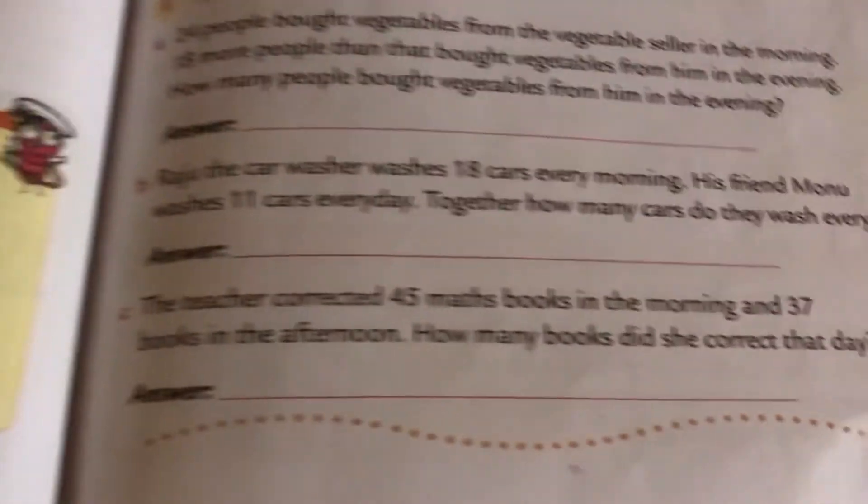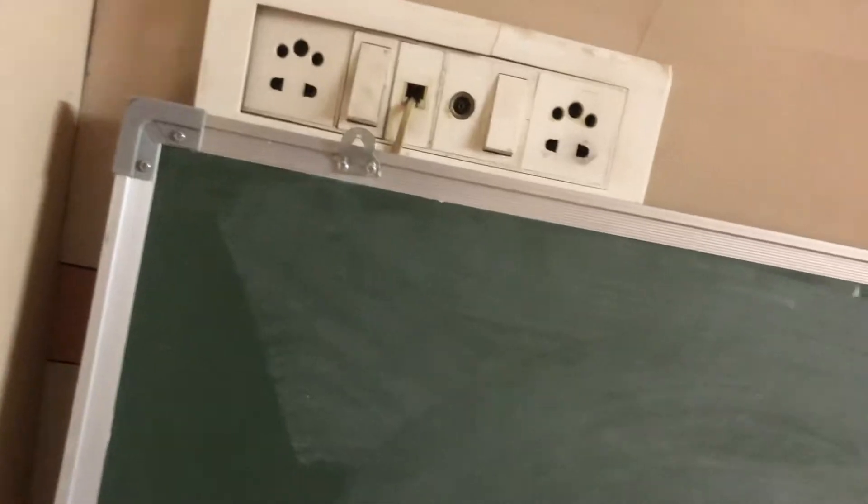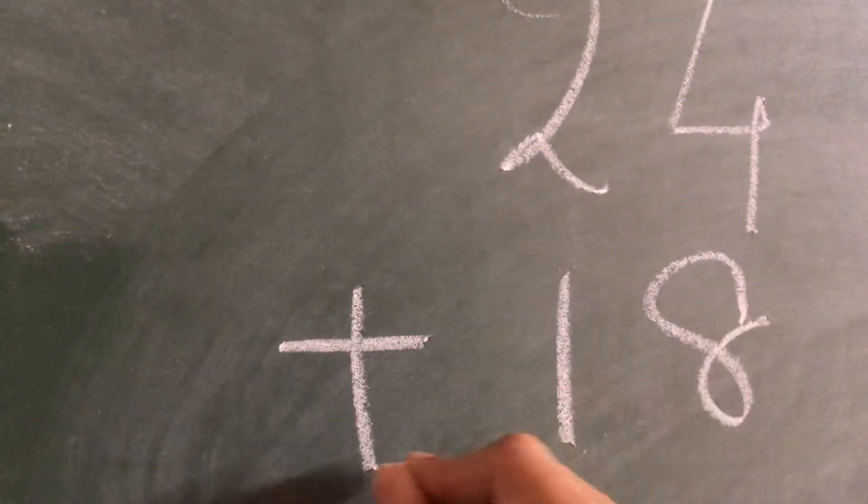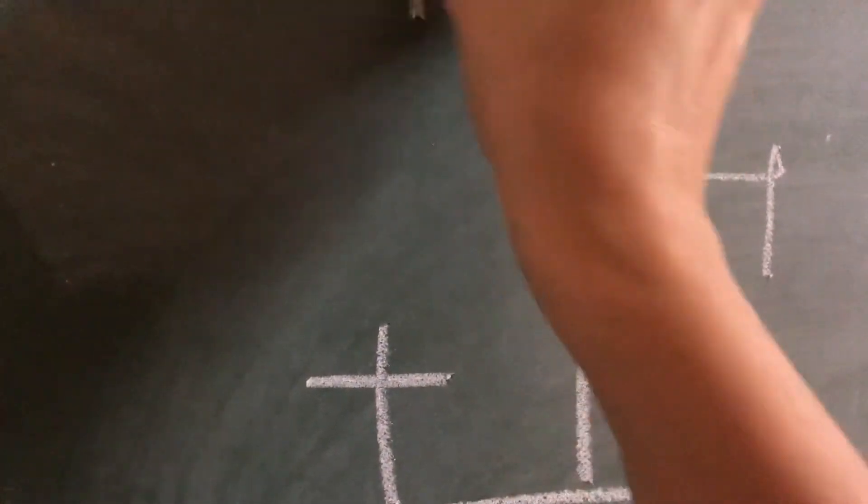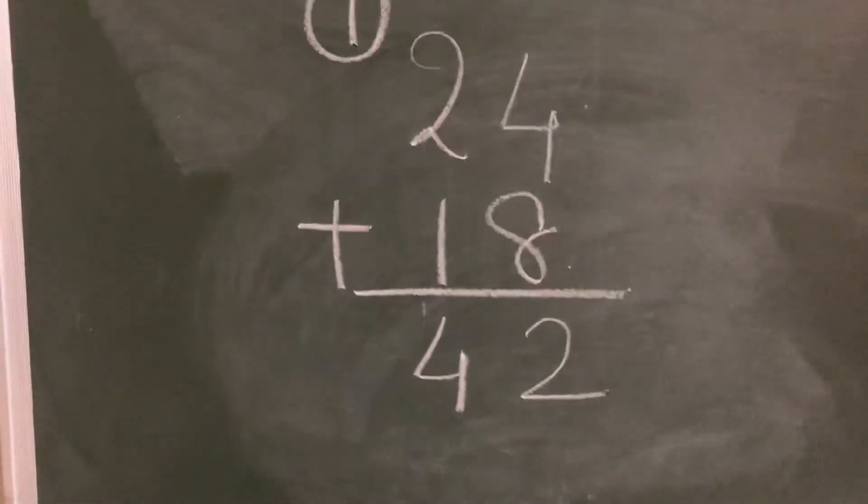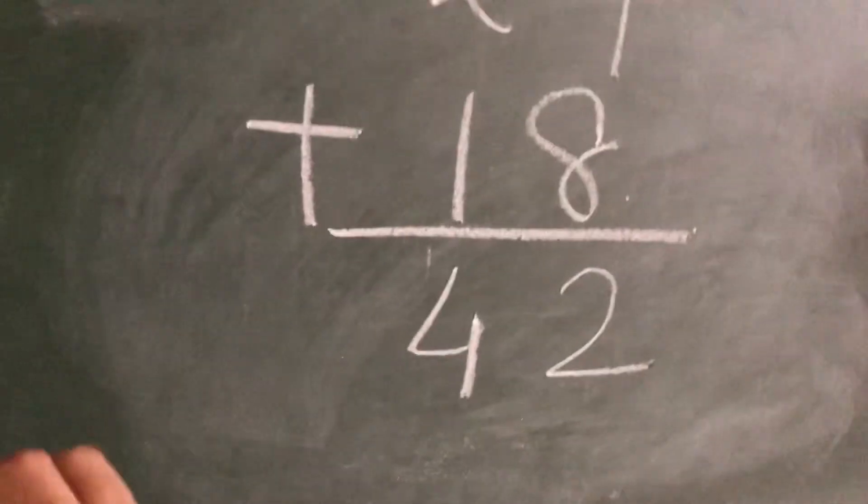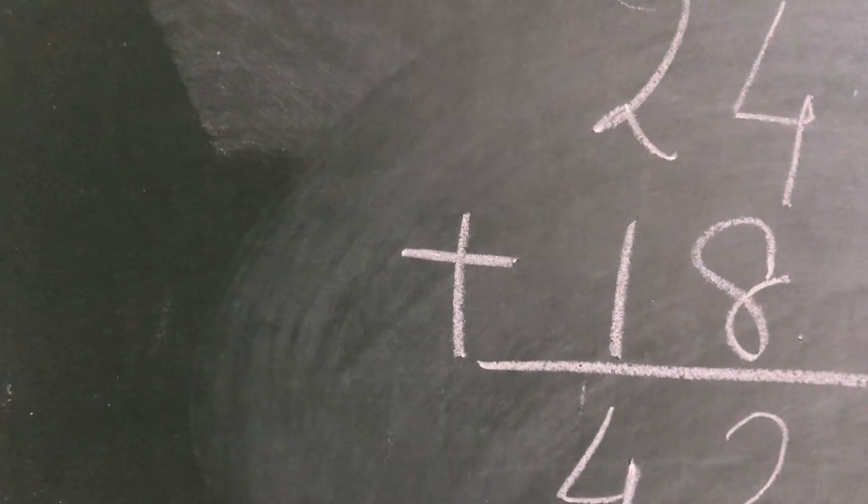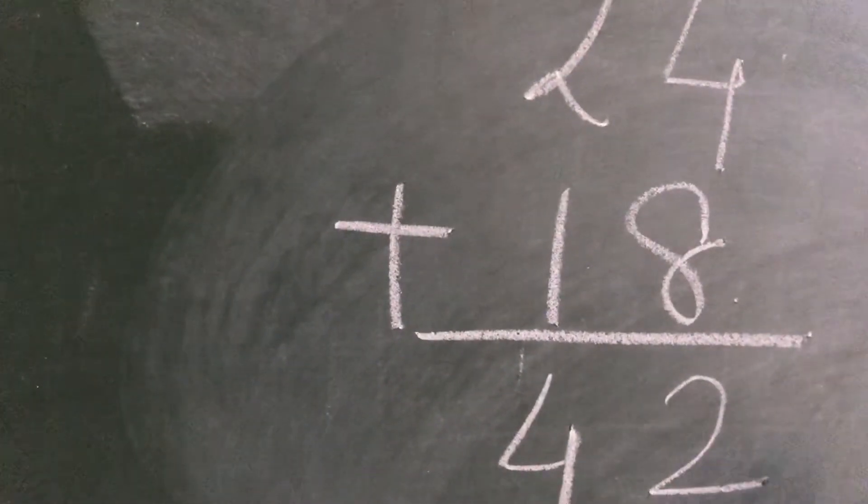Now the last thing which we are going to do is word problems. I will just take a word problem from page number 81. I will just take one sum and the other two you will do it. First one: 24 people bought vegetables from the vegetable seller in the morning. 18 more people than that bought vegetables from him in the evening. So how many people bought vegetables from him? 24 and then 18. So 8 plus 4 is 12. And 2 plus 1 is 3, and plus 1 is 4. So answer will be 42.